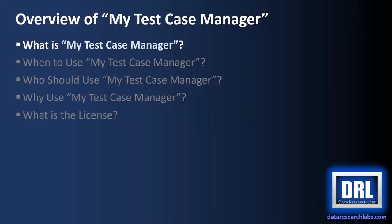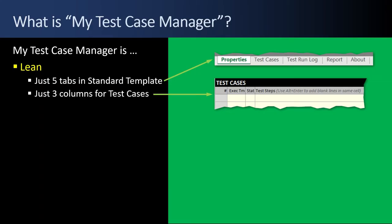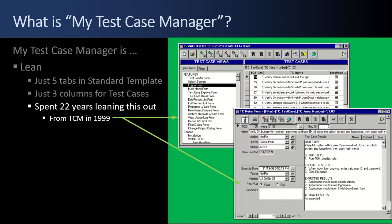First up, what is MyTestCaseManager? MyTestCaseManager is lean. There's just five tabs in the standard template and three columns for the test cases. It's simple and clean. I've spent 22 years leaning this out. The pictures to the right are from TCM TestCaseManager that I built in 1999 for my little freeware company Pierce Business System, way back in the day. That was a fairly thick app — a lot of buttons, a lot of functionality, with a half dozen reports and another five or six screens, multiple language support, and all kinds of stuff embedded in this app.